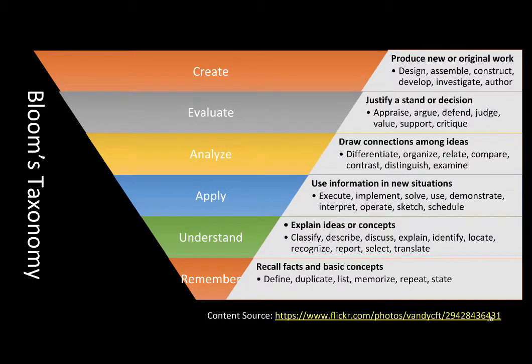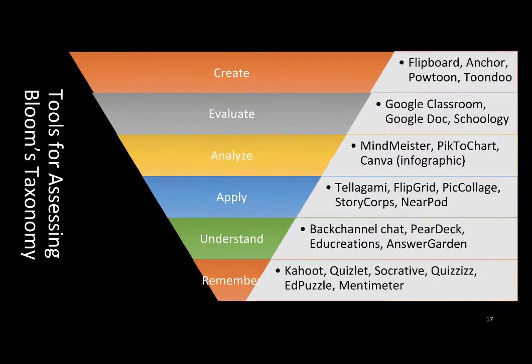In Bloom's taxonomy, there are six layers of learning objectives for cognitive learning. Learning should take place at all levels, not just at the remembering and understanding levels, which seem to dominate most of the classroom assessment activities. To achieve each level, you can design activities to achieve the objectives with the suggested verbs in, but not limited to, the bullet list. There are many digital tools to assess student performance at each level. Remember, all these tools can be used to achieve multiple objectives. It all depends on how teachers design the assessment activities to achieve a specific learning objective.